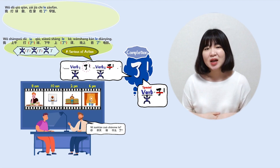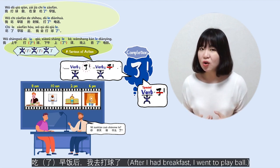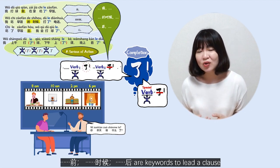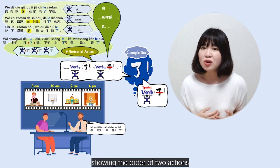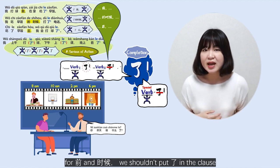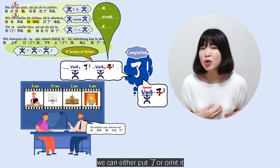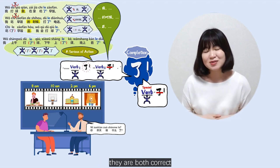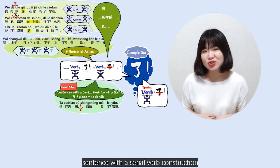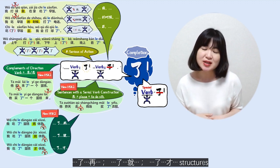我打球前在家吃了早饭. 我吃早饭的时候打了电话. 吃了早饭后我去打球了. The words 前, 时候, 后 lead clauses showing the order of two actions — both verbs were completed. For 前 and 时候, we shouldn't put 了 in the clause. But for 后 sentences, we can either put 了 or omit it — both are correct. The same logic applies to serial verb constructions, complements of direction, 了在, 了就, 了才 structures, and pivotal sentences — we will discuss them in upcoming videos.